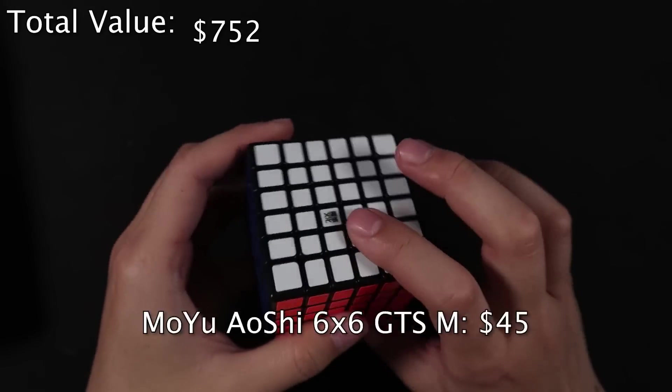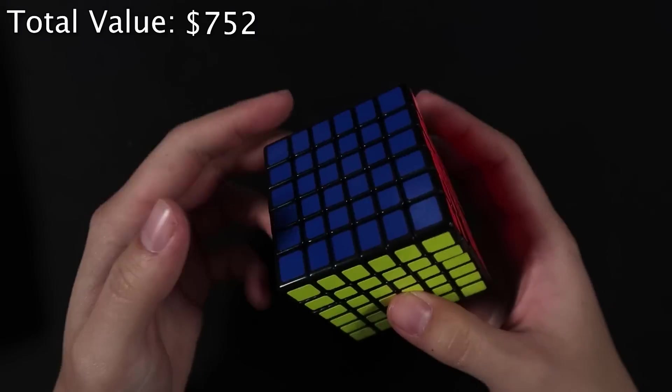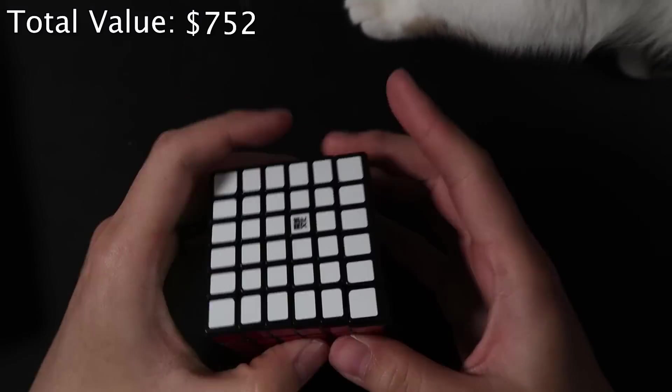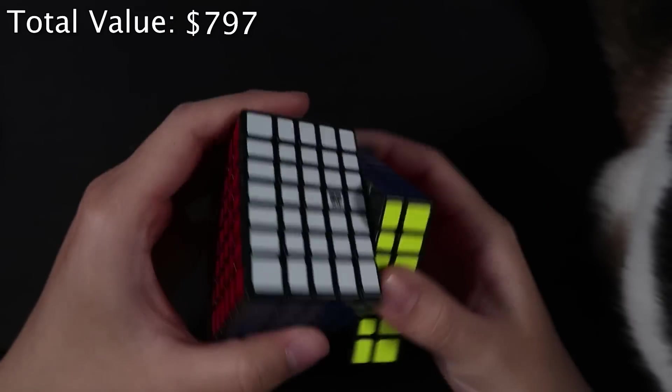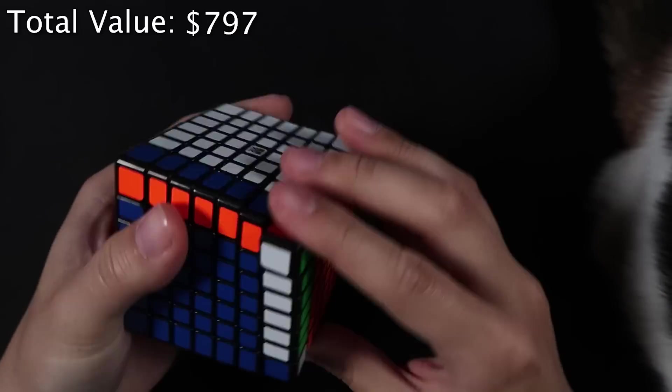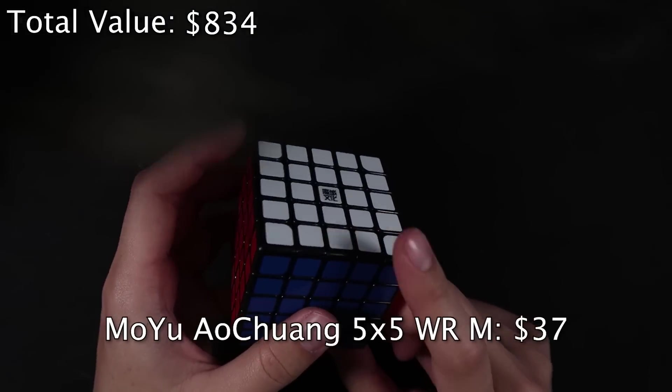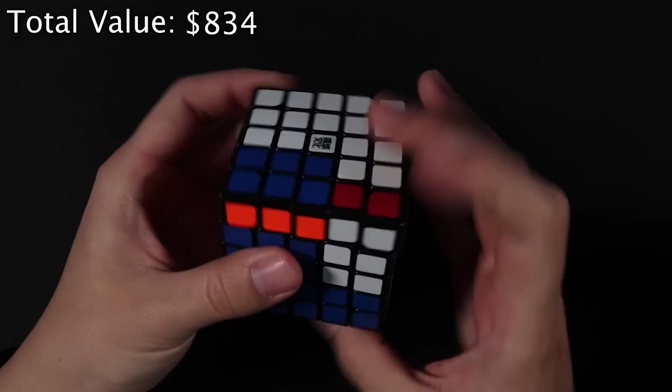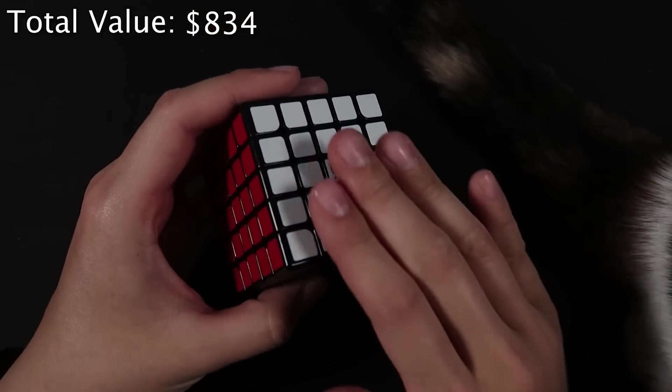To kind of make up for it, we also got a Moyu GTS Aoshi 6x6. And this one's great. So it's magnetic. It turns really well. I love the feel of it. It's kind of sandy. And I'm kind of partial to stickered cubes. So I'm actually kind of happy that it's stickered. And that's my cat. This is the Moyu Aofu GTS M. So it's a 7x7 magnetic. This cube is amazing. It turns so well. I love this one. I guess we may as well keep going with Moyu puzzles. So this is the 5x5. This is the Ao Chuang 5x5 WRM.